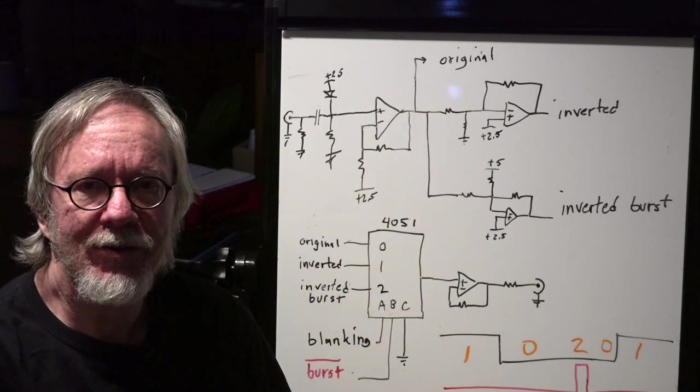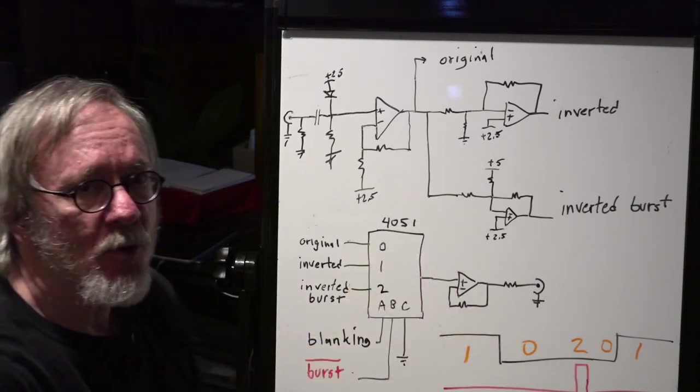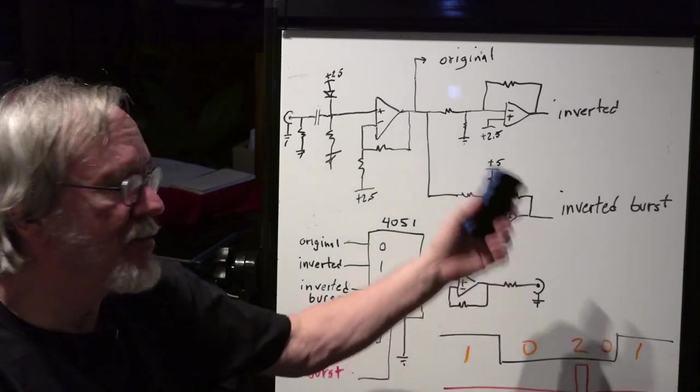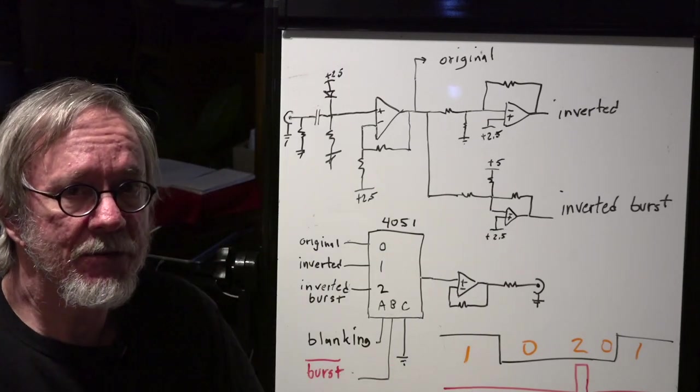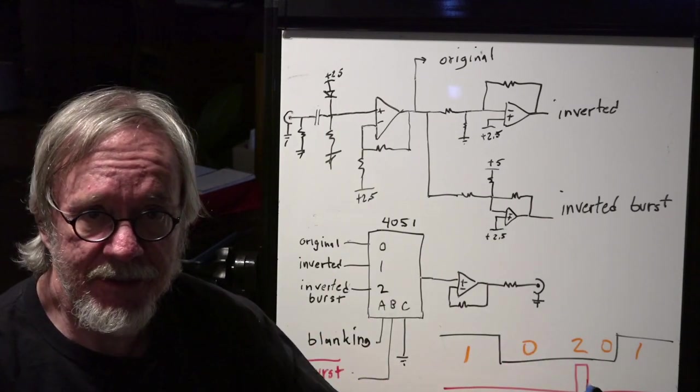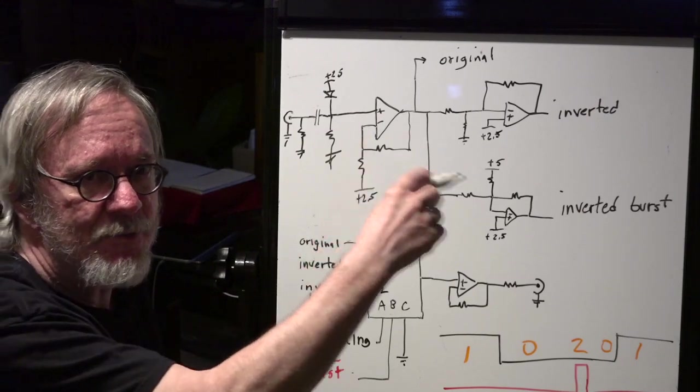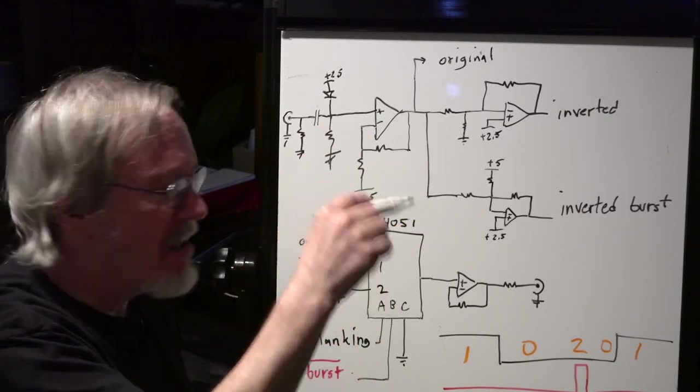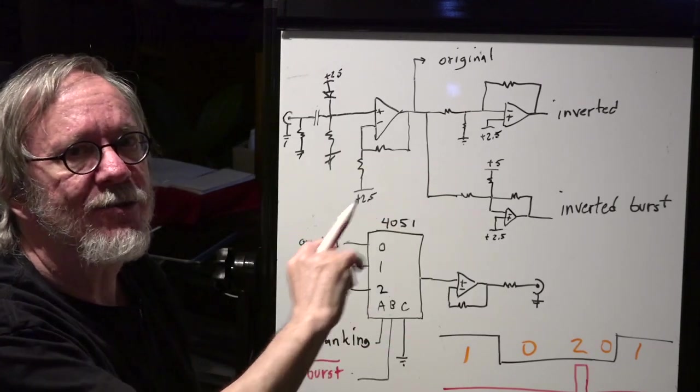Hello, Rob here. This is lesson seven. I have up here on the board the entire circuit we're working on except for the part that makes the burst and the blank. This is the video input section and the video output section. We've seen the video input section. It's easier if I draw it out nice before. And I'm not drawing any values here, just so you get the idea of the structure and the flow.